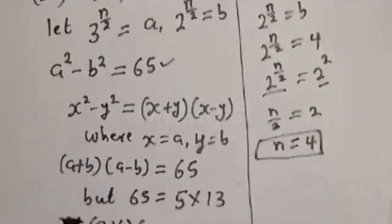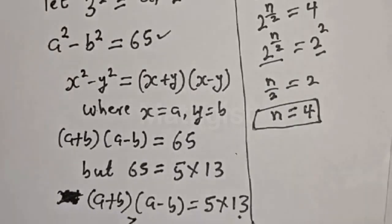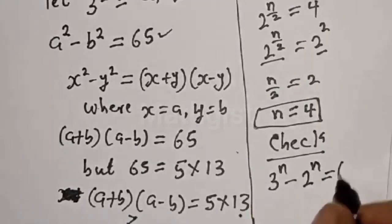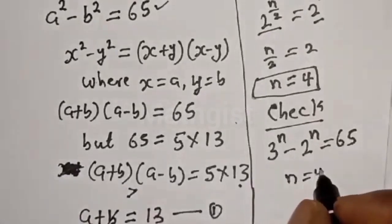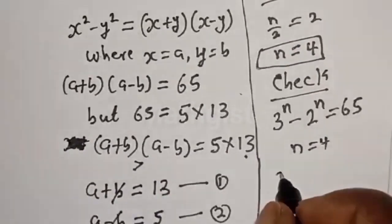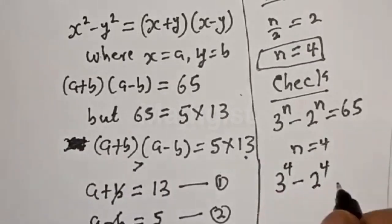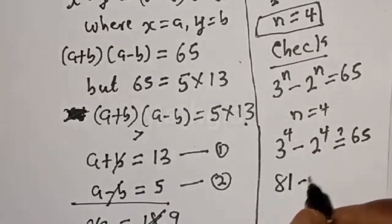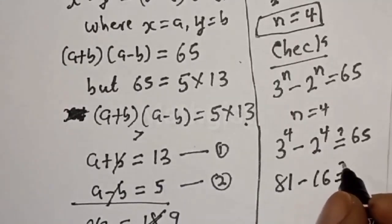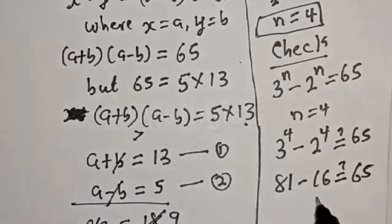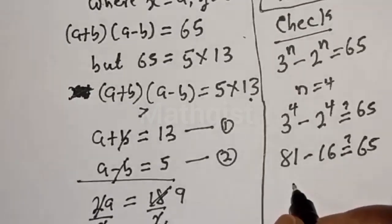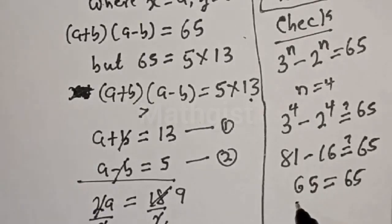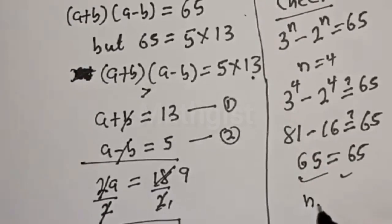Let's verify: 3 raised to power n minus 2 raised to power n must equal 65, with n equal to 4. We compute 3 raised to power 4 minus 2 raised to power 4, which is 81 minus 16, equal to 65. This satisfies the given equation, confirming N equals 4.